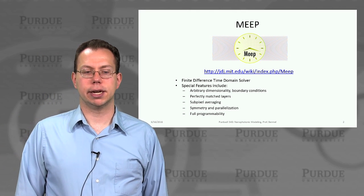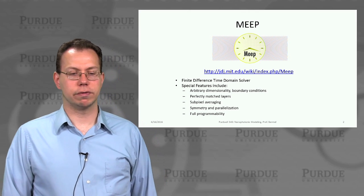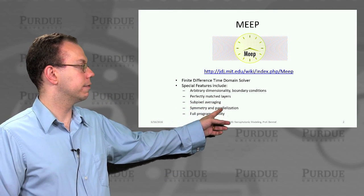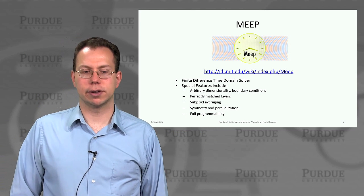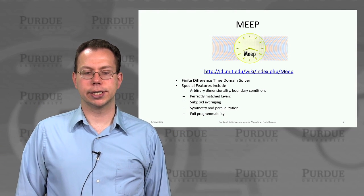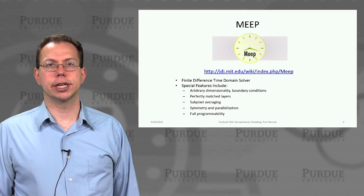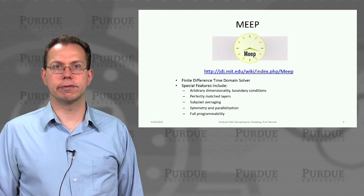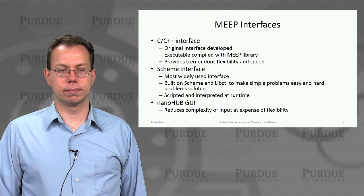MEEP is a finite difference time domain solver with special features including arbitrary dimensionality, perfectly matched layers, subpixel averaging for higher accuracy, symmetry and parallelization for faster run times, and full programmability for greatest flexibility.